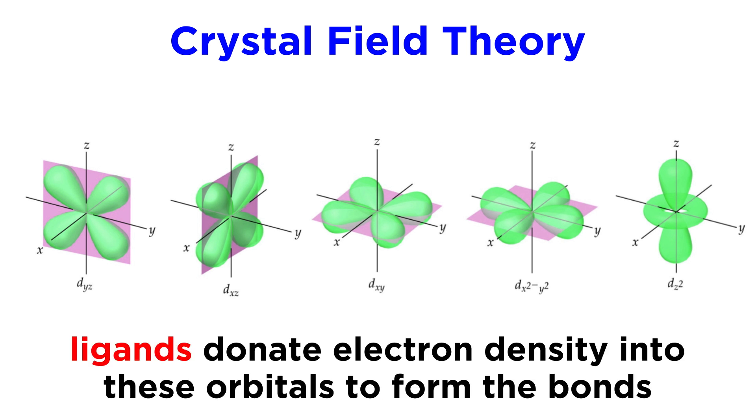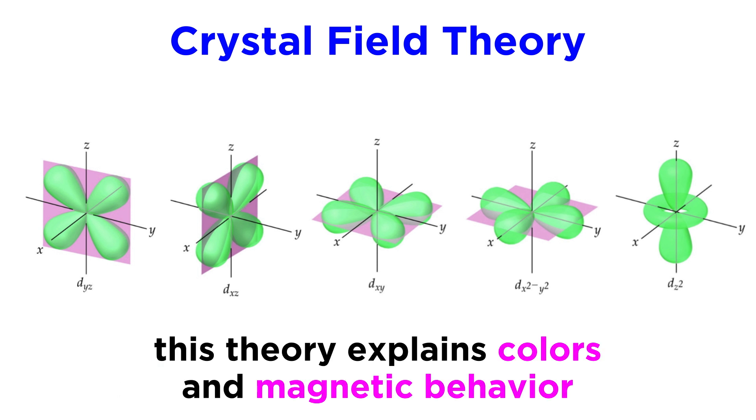These are the orbitals that ligands donate electron density into, so these are the chief concern for the model. And this model, although incomplete just like VSEPR theory or valence bond theory, does wonderfully explain things like the colors, magnetic behavior, and structures that can be observed with coordination compounds.